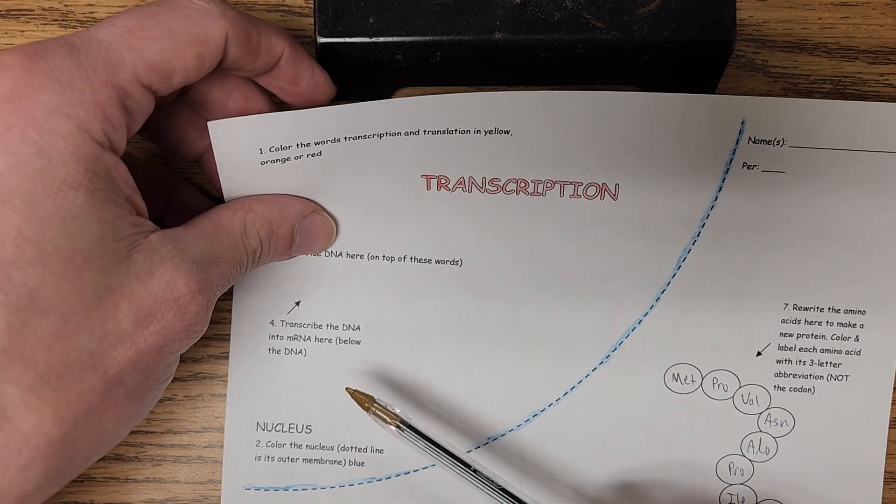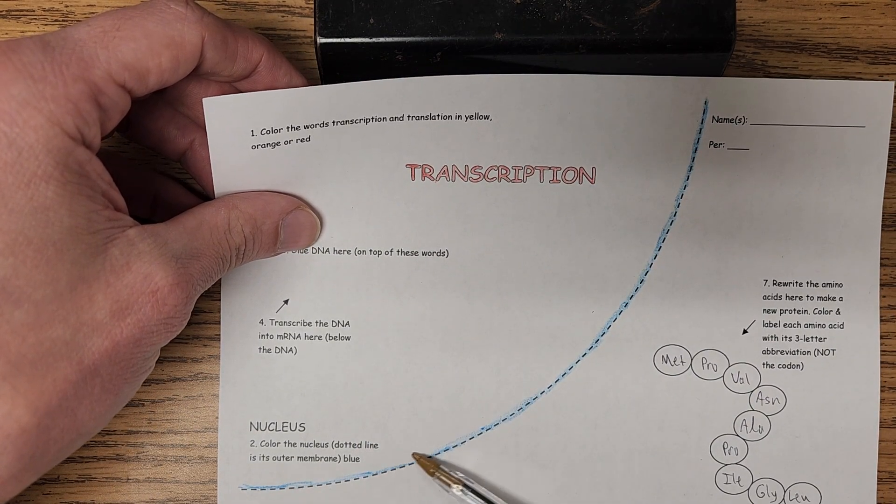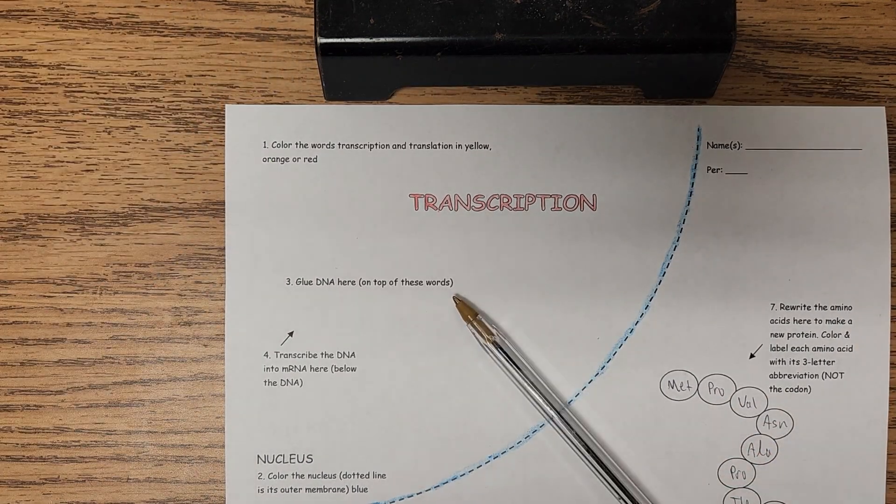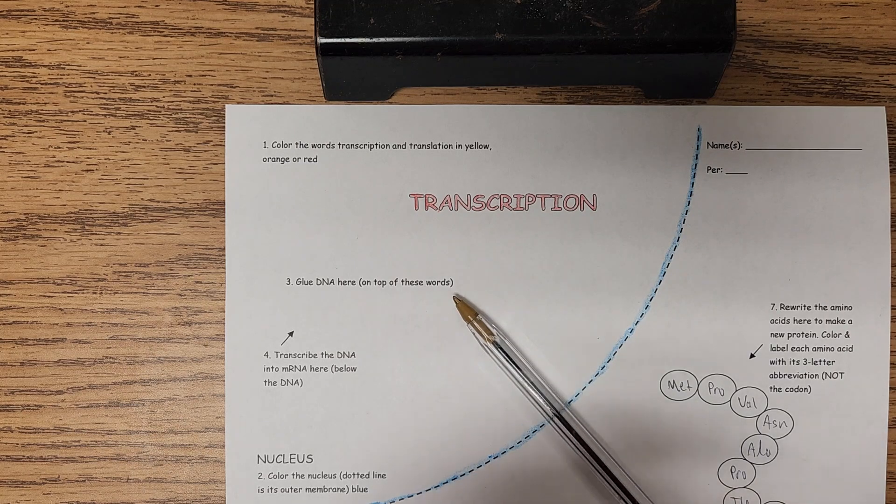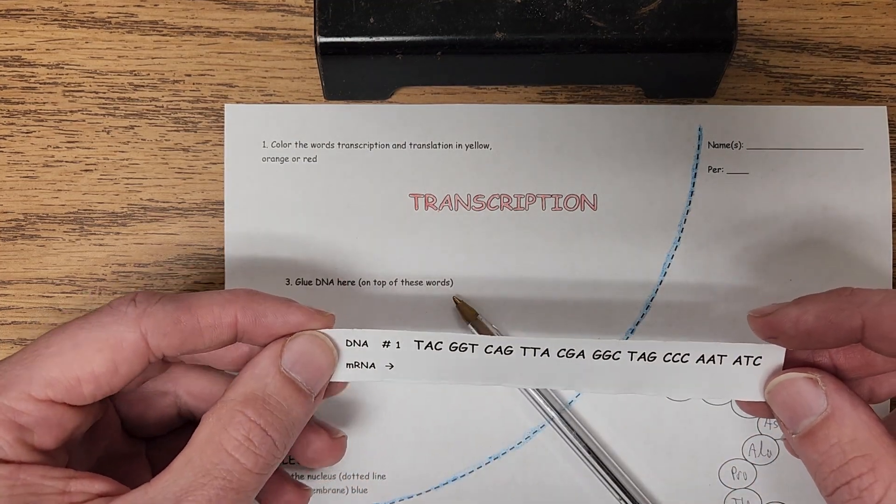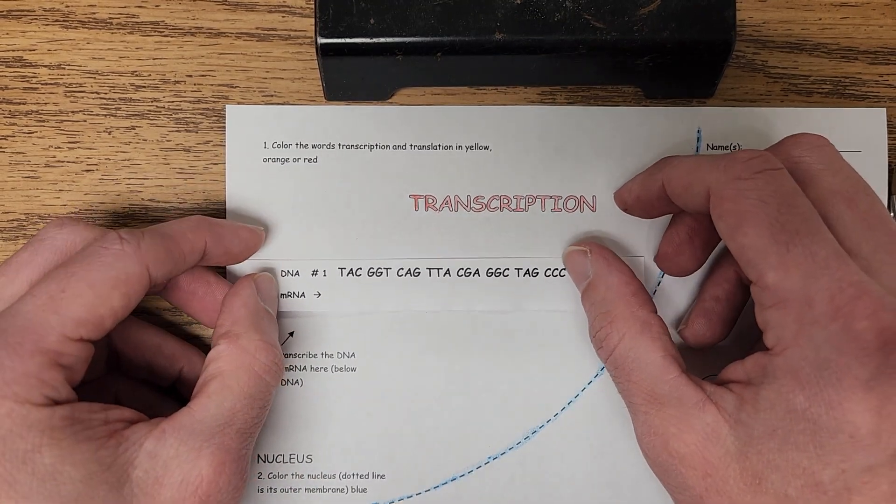Direction number two, color the nucleus dotted line in blue, you'll see that was done here. Direction number three says glue DNA here. That refers to these DNA strips you'll get. There's several different ones. This particular example is DNA strip number one, and you can glue or tape it right here on top of those words.